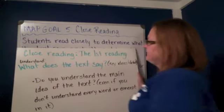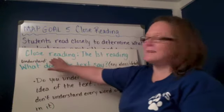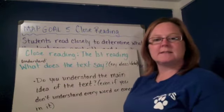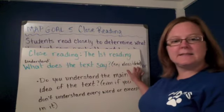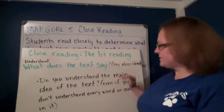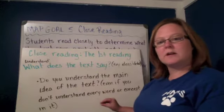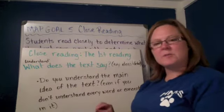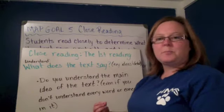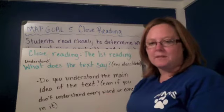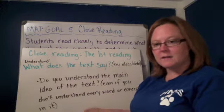Close reading — the first reading. The purpose of the first reading is to understand: what does the text say? What are the key ideas and details? Do you understand the main idea of the text, even if you don't understand every word or concept in it? That first time you read it, it's okay to not know words, it's okay to not fully get what they mean. But do you get the big idea — the main thing they wanted you to learn? That's what we'll be looking at the first time you read it. Just read it to understand it.